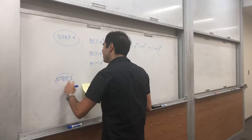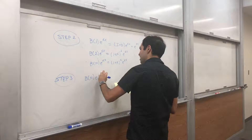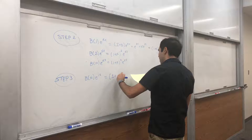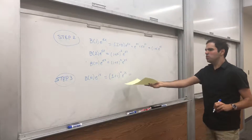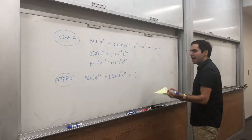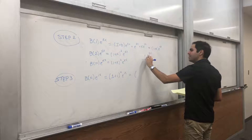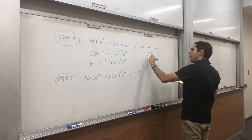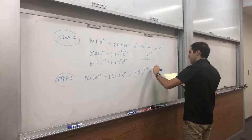Now let's do the same thing but with e^{ix} to get cosine and sine. By our formula, B_n(e^{ix}) = (1 + i)^n * e^{ix}. Notice that (1 + i) is a complex number with radius sqrt(2) and angle pi/4, so 1 + i = sqrt(2) * e^{i*pi/4}. Therefore (1+i)^n = 2^{n/2} * e^{i*pi*n/4}.